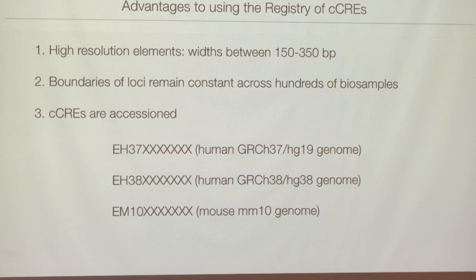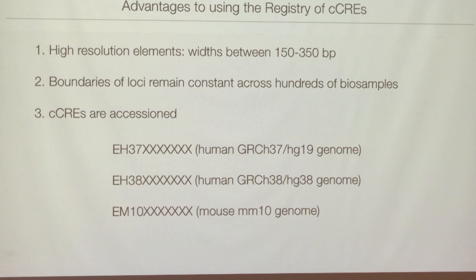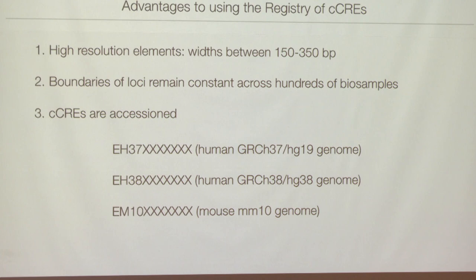We actually accession these CCREs just like we accession genes. When the genome version changes — for example from HG19 to HG38 in humans, or mm10 to mm11 in mouse — we accession them specifically so that every time we change versions, you can always trace back to previous versions of the same element.